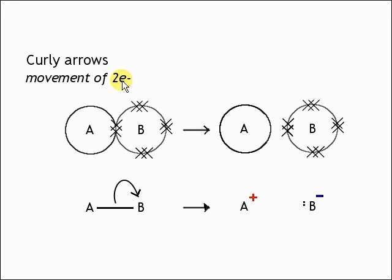Now a curly arrow is movement of two electrons. So if we can imagine that in a covalent bond here between A and B, we've got two shared electrons. So that is the covalent bond, those two electrons.